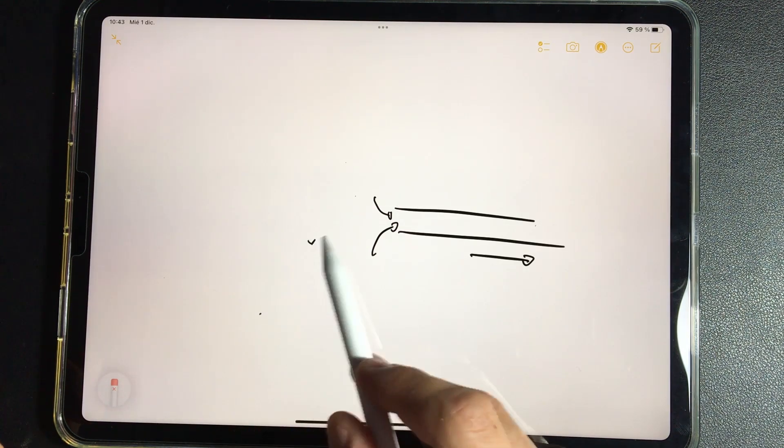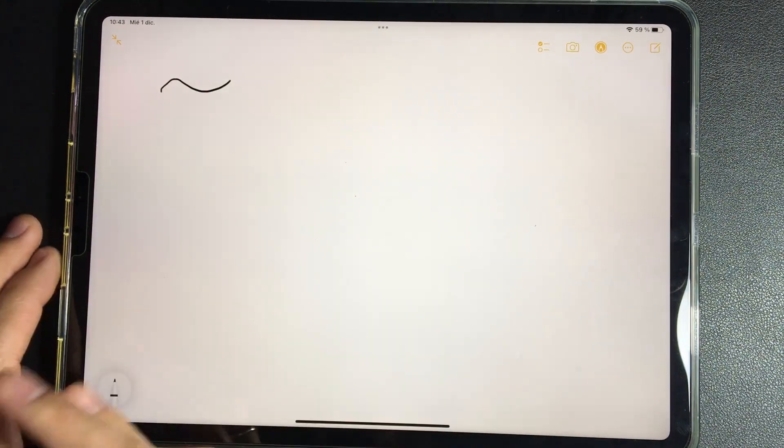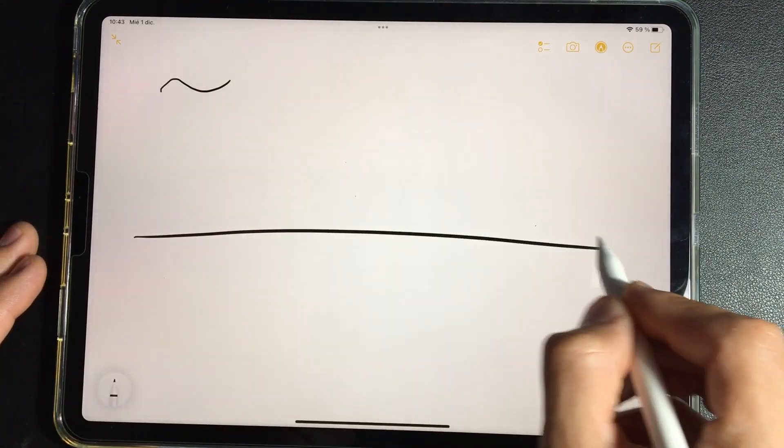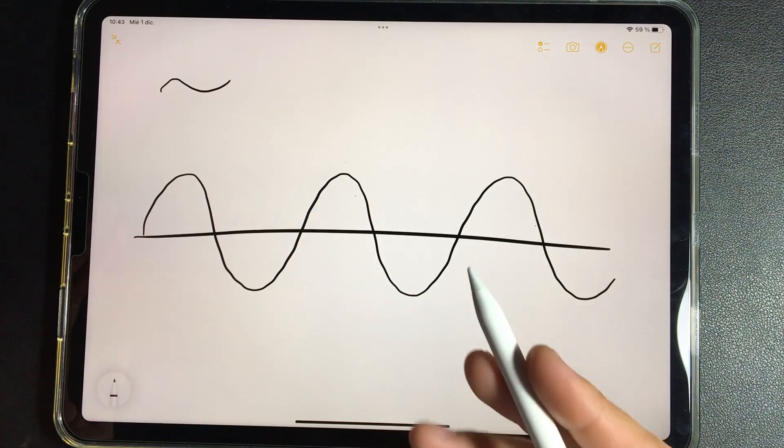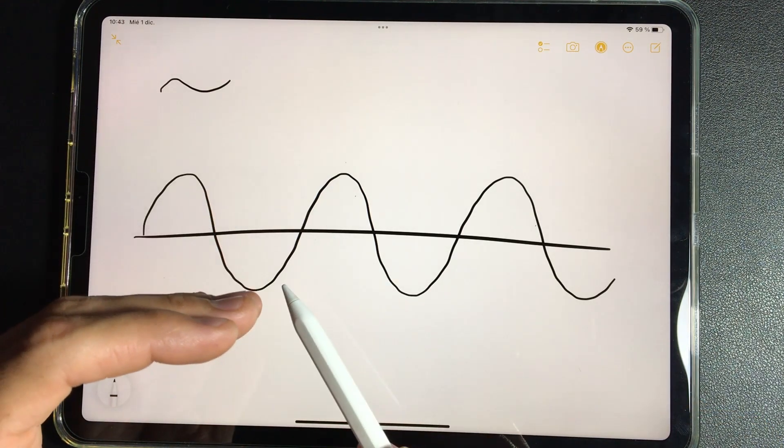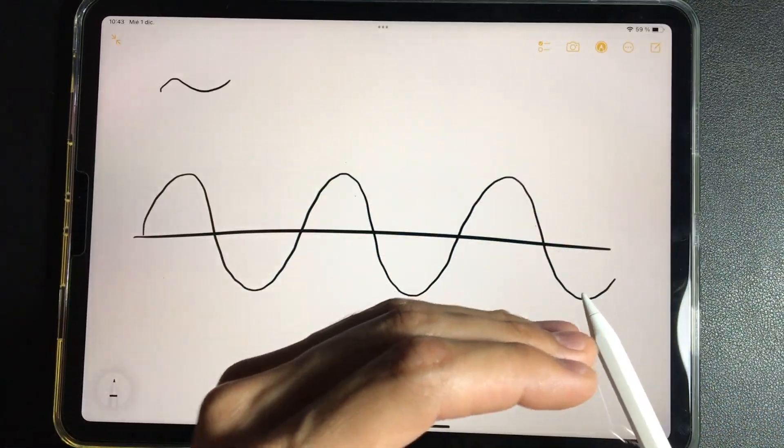We said a moment ago that the symbol for alternating current was this. If we draw alternating current on a graph, on a line, we will draw it as follows. What does this tell us? That the electrons enter from one side and from the other, from one side and from the other.